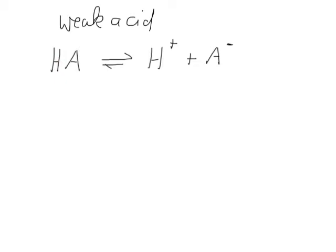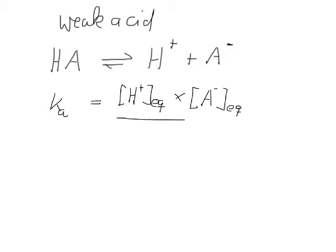We can write this in chemical terms as the dissociation constant. The dissociation constant, which we abbreviate as Ka, equals — in the equilibrium — the concentration of the protons at equilibrium times the concentration of the anion at equilibrium, divided by the concentration of the acid remaining at equilibrium.